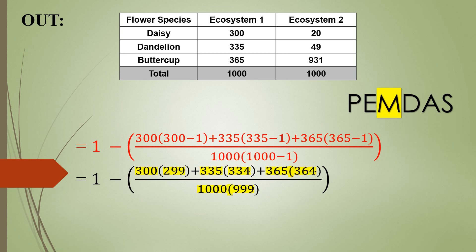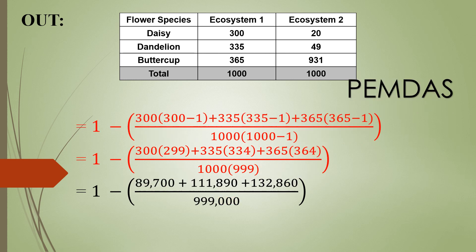So now we need to multiply what's inside of the parentheses with what's outside of the parentheses. So we are multiplying 300 times 299, 335 times 334, 365 times 364, and 1000 times 999. Once we multiply those numbers, we get 89,700, 111,890, 132,860, and down below we have 999,000.